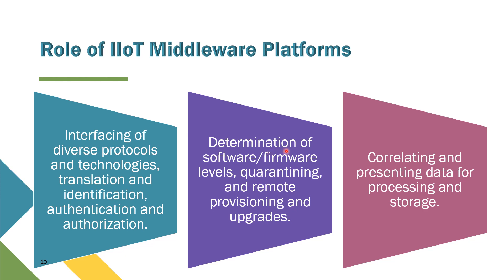The second role is determination of software and firmware level, quarantining, and remote provisioning and upgrades. The system is supposed to be able to identify what software and firmware is being used, and then quarantine anything if it detects any breach or attack on the system. It can also provide remote provisioning and upgrades. The last role is correlating and presenting data for processing and storage — it should be able to correlate all of the data coming from all devices and sensors, and then present the data for processing and storage into the system.